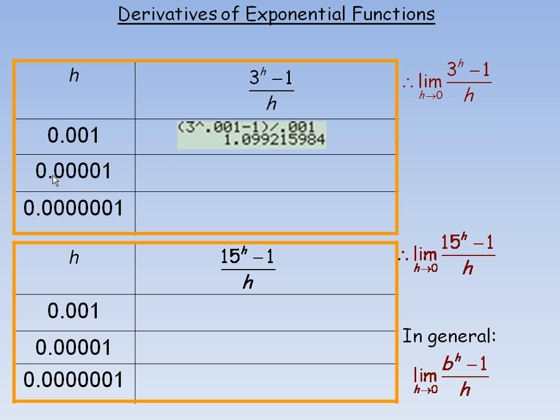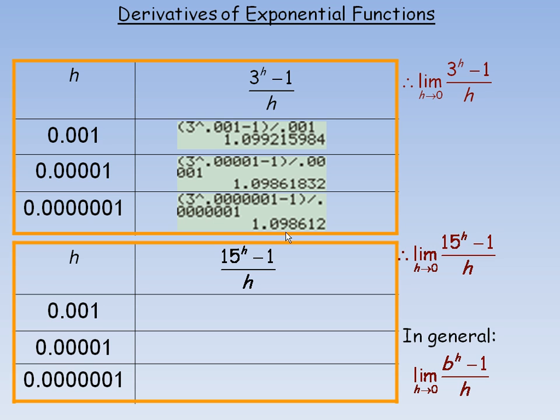And I get 1.099215, etc. Now we're going to put in an even smaller number, closer to 0, in place of h. And so I get 1.0986, etc. So it looks like it's 1.09 something. And then this number, of course, is even closer to 0. And we get 1.0986. So notice it seems to be settling around 1.0986 something.